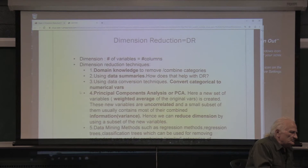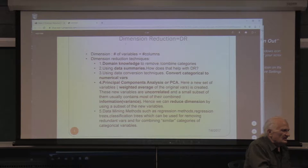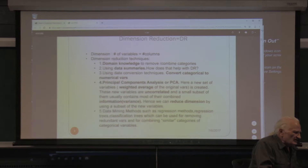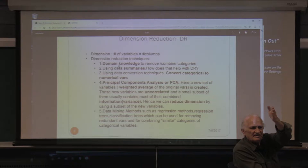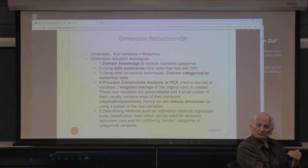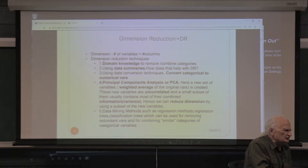Dimension reduction: a dimension is the number of variables, the number of columns. There are many techniques. If you have many variables, many dimensions, how do you know which ones to remove? In order to do a good job of that, you have to have domain knowledge, which I talked about last time.